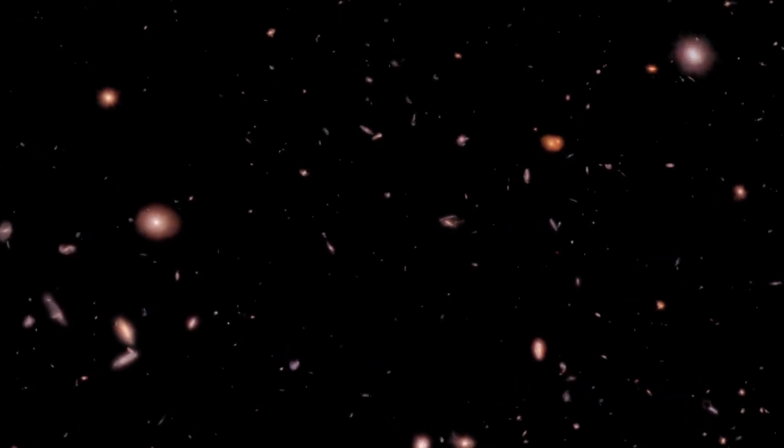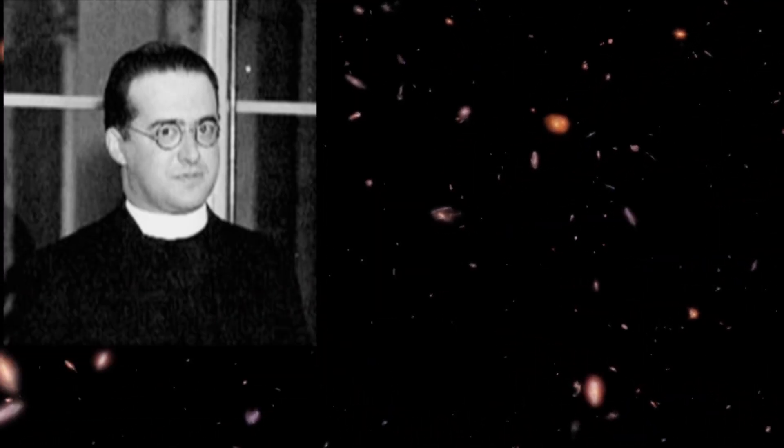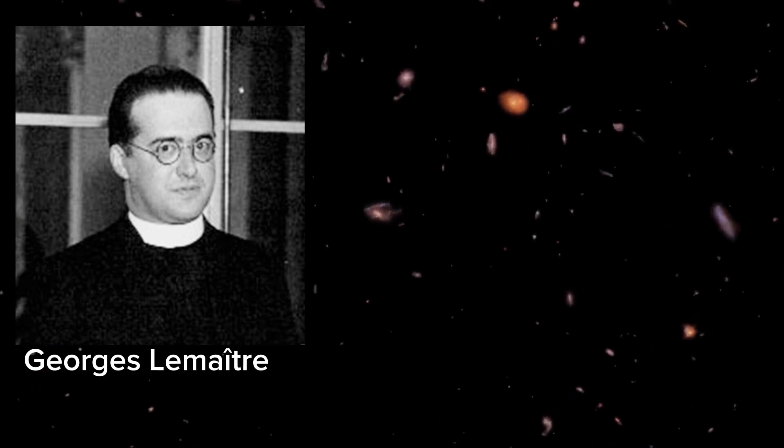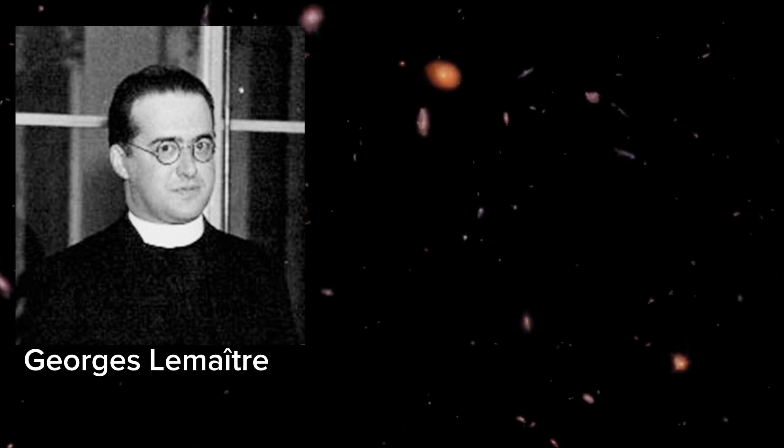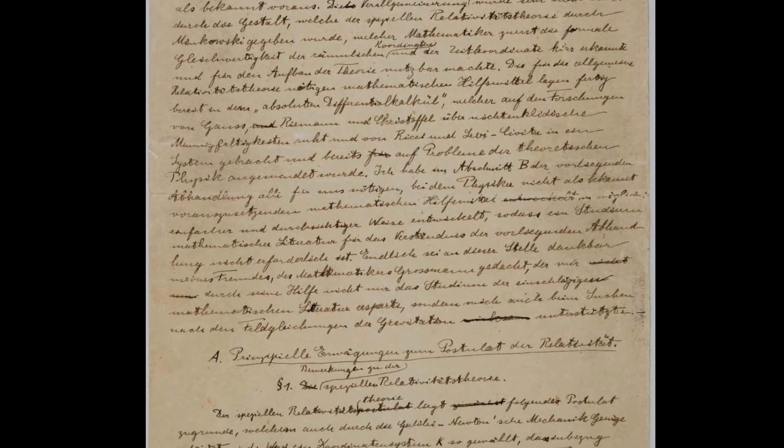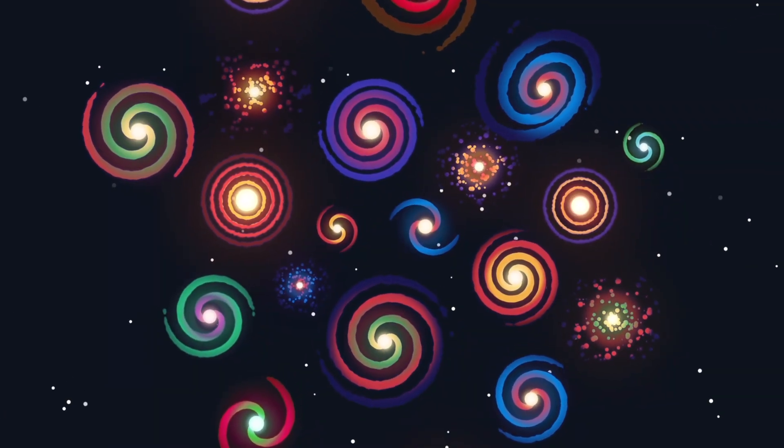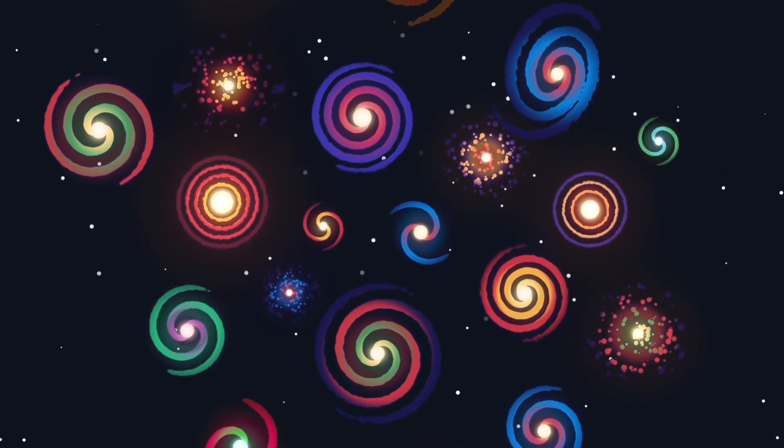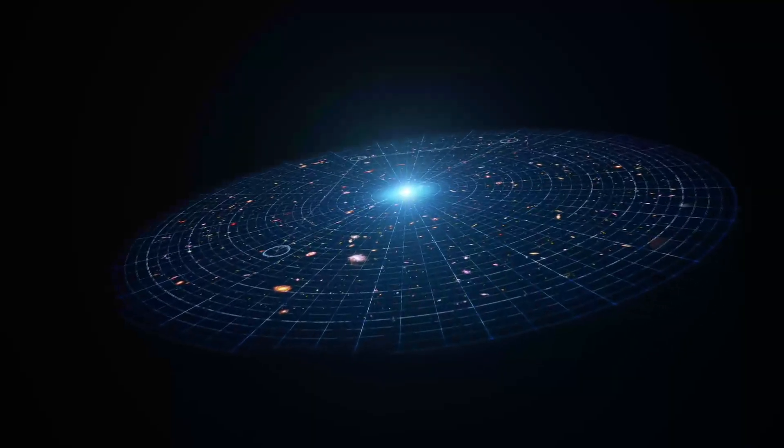To explain this recessional velocity, in 1927, Georges Lemaitre, a Belgian physicist and Roman Catholic priest, independently derived Friedman's equations from the Einstein field equations. Those equations suggested that the inferred recession of the galaxies was due to the expansion of the universe.